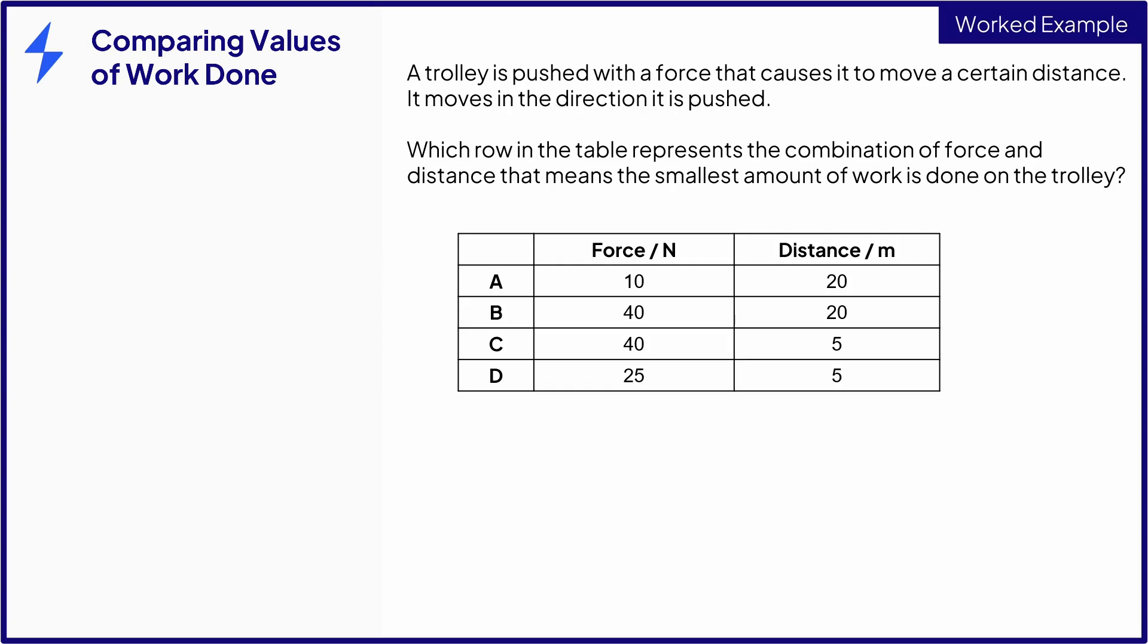Which row in the table represents the combination of force and distance that means the smallest amount of work is done on the trolley? Be careful here. It's tempting just to guess which value would be the smallest from the numbers given, but to avoid losing marks it's always better to do all the calculations.